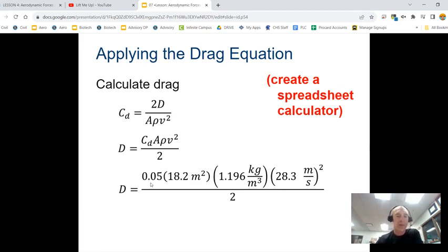So if we sub these values in, the coefficient of drag is 0.05. The area is 18.2. You can put these in your calculator if you've recreated this. The air density, the velocity divided by 2, and you would get an answer of 436 Newtons for drag.